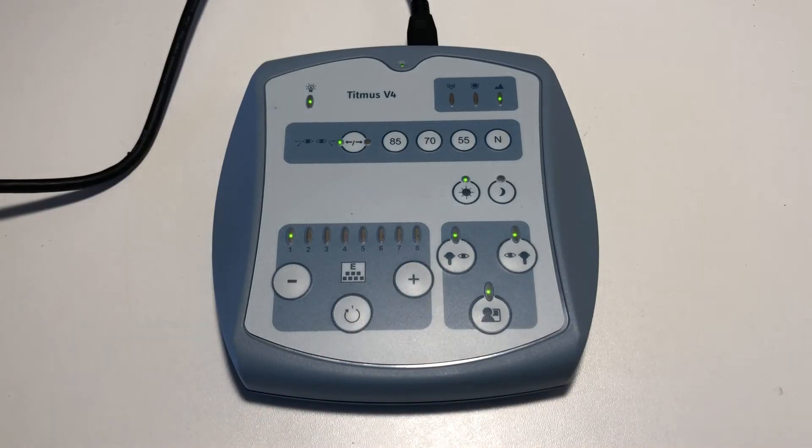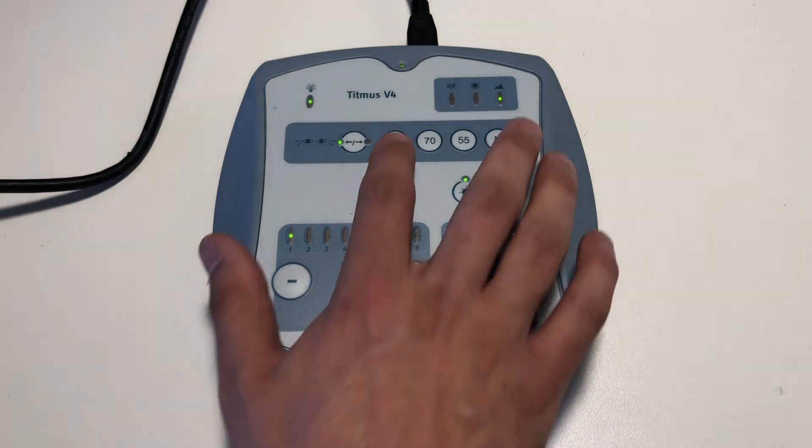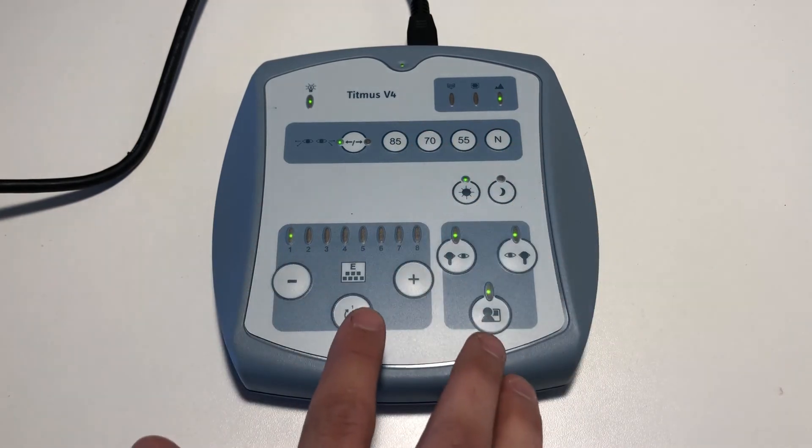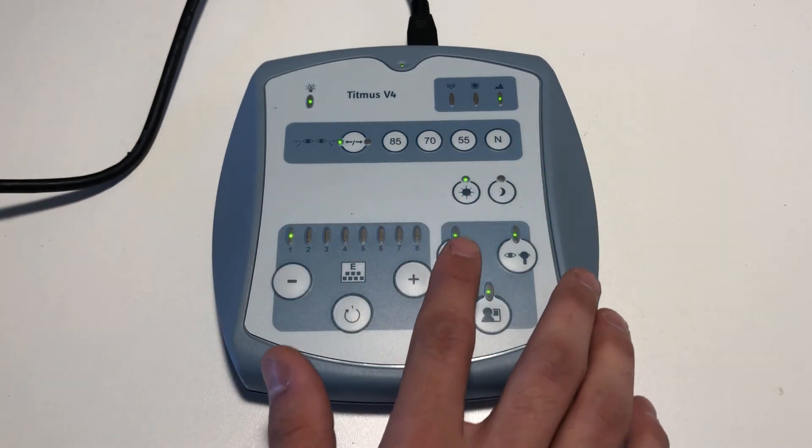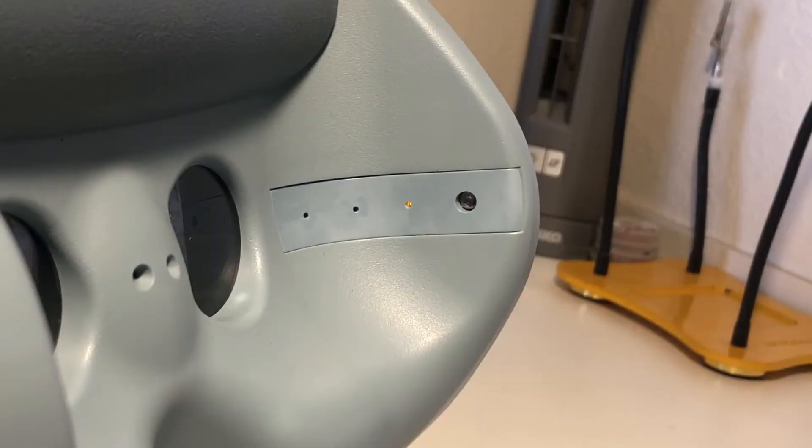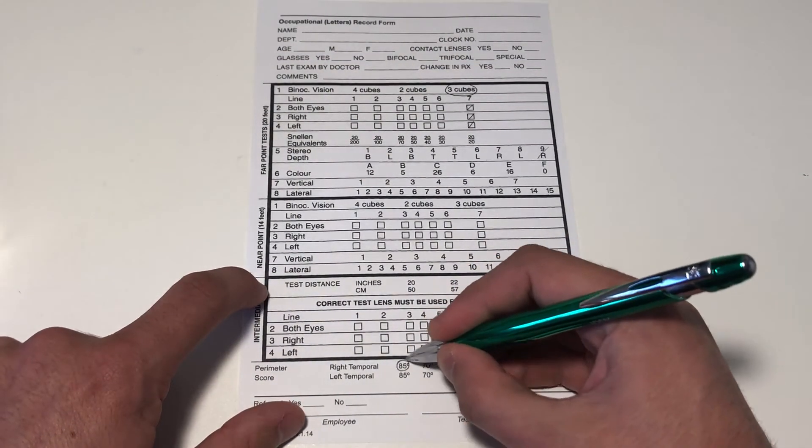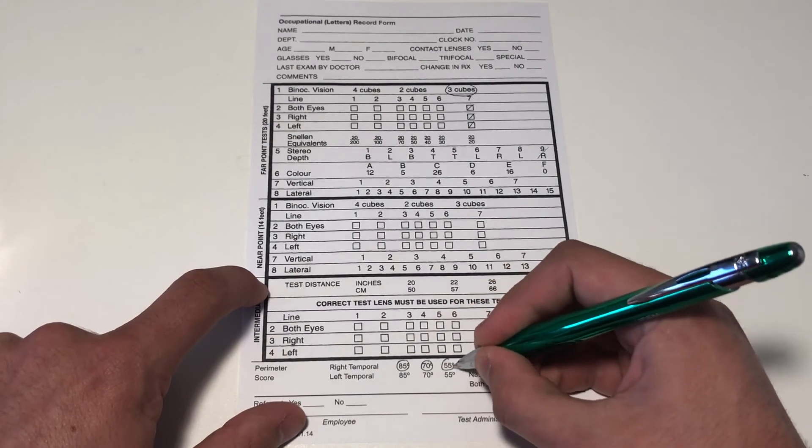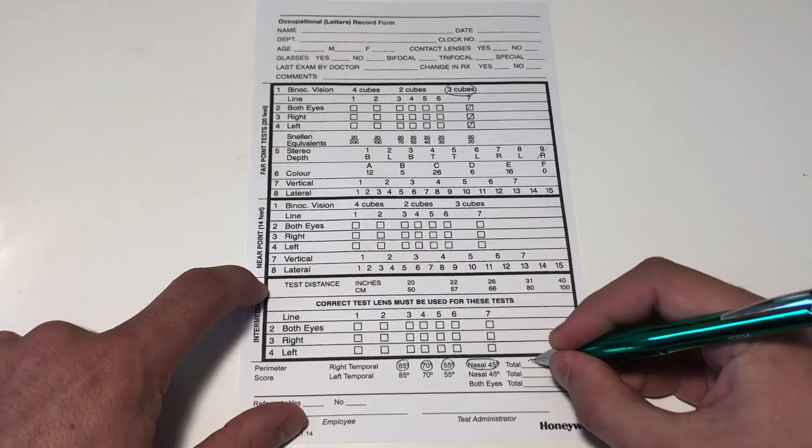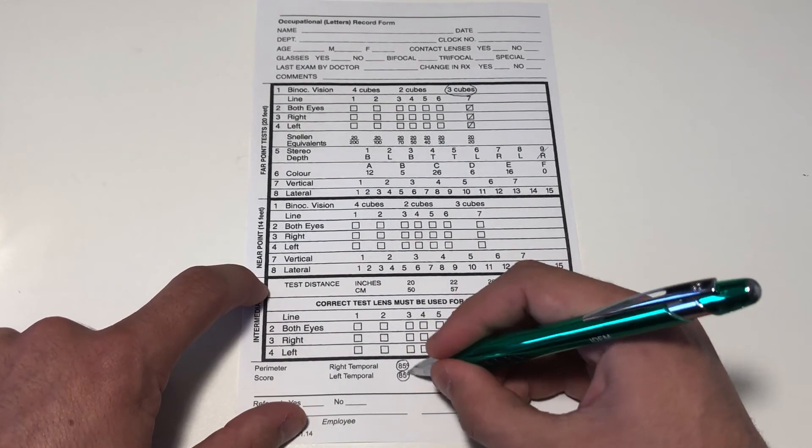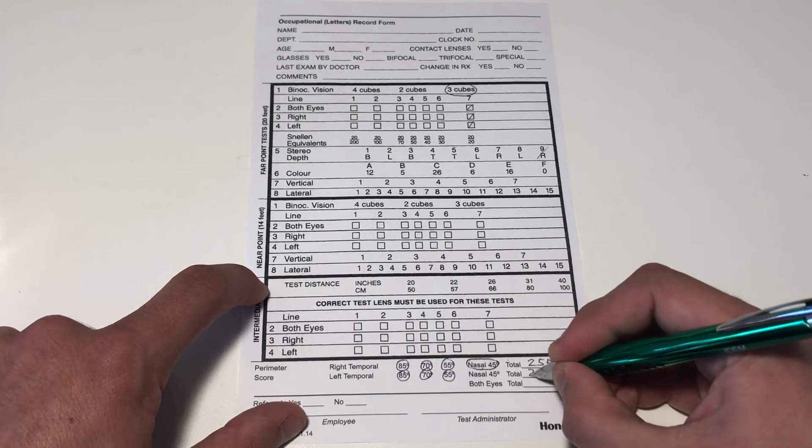Advance the slide back to number one. Here we will be testing for peripheral vision. Ask the patient to raise their hand each time they see a light flash. We will test for temporal vision at 85, 70, and 55 degrees, as well as a nasal test at 45 degrees. The patient must see all lights in order to pass. On the record form, we record the results by circling each light the patient was able to see. We tally the results by simply adding the degrees up. The passing score will be 255 for each eye, or 510 total.